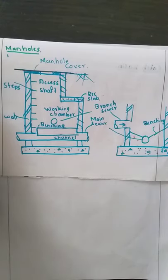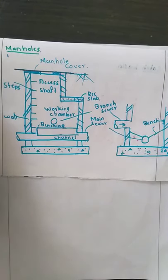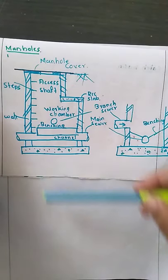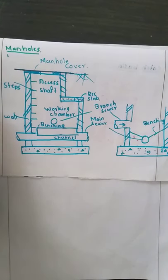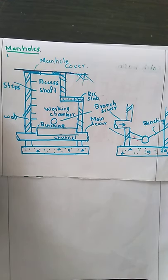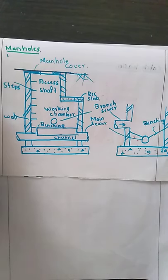Steps and ladders are meant for climbing. The person who wants to enter into the manhole will go through these steps. These steps are made up of cast iron, and the center-to-center distance between two steps is around 20 centimeter. The vertical distance between the steps may be kept up to 30 centimeter, but normally it will be around 20 centimeter.